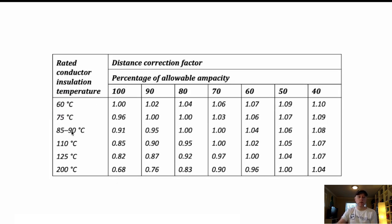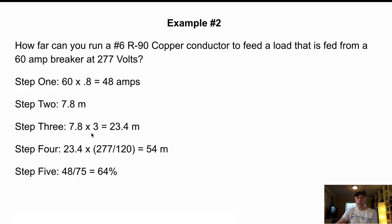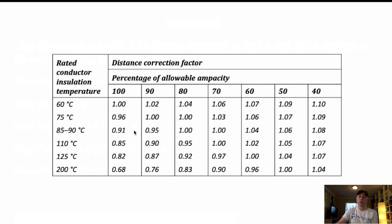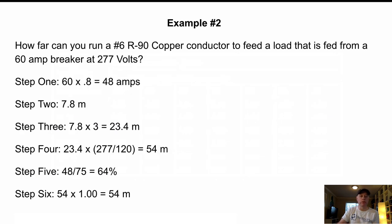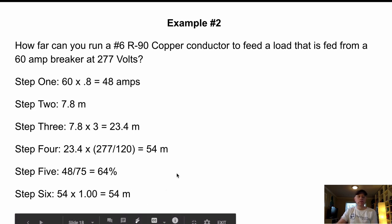Again, we go turn the page to note number three and we've got this 85 to 90 and we've got 64 percent. So we're going to the 70 percent column because there is no 64 percent column. So we run that across and we have distance correction factor of one. So it's so negligible that it makes no difference. It's so close to what it's rated is that we can't push it a little bit further. So we're just going to go 54 times one, which is 54 meters. And there you go.